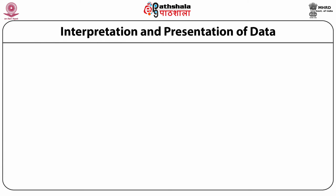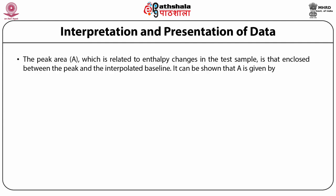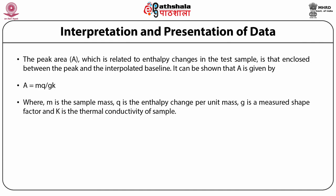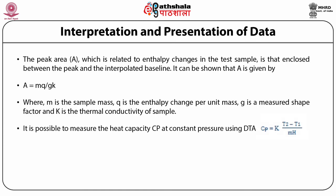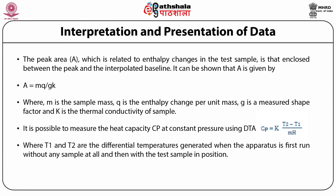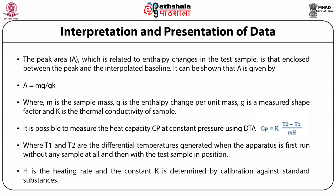Interpretation and presentation of DTA data: The peak area A, related to the enthalpy changes in the test sample, is enclosed between the peak and the interpolated baseline. A = MQ / GK, where M is the sample mass, Q is the enthalpy change for unit mass, G is the measured shape factor, and K is the thermal conductivity of the sample. Heat capacity Cp at constant pressure can be measured using DTA: Cp = K·(T₂ − T₁) / (M·H), where T₁ and T₂ are the differential temperatures obtained first without any sample and then with the test sample in position, H is the heating rate, and K is determined by calibration with standard substances.